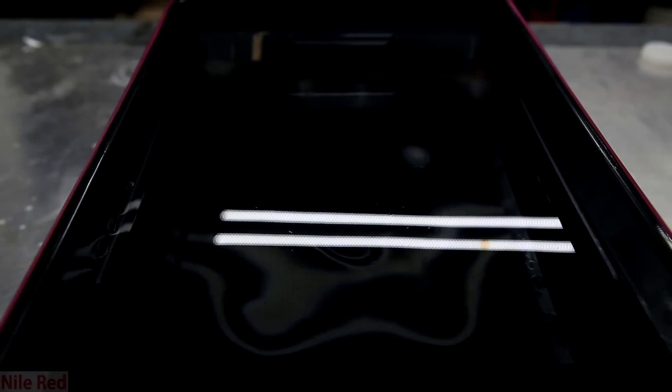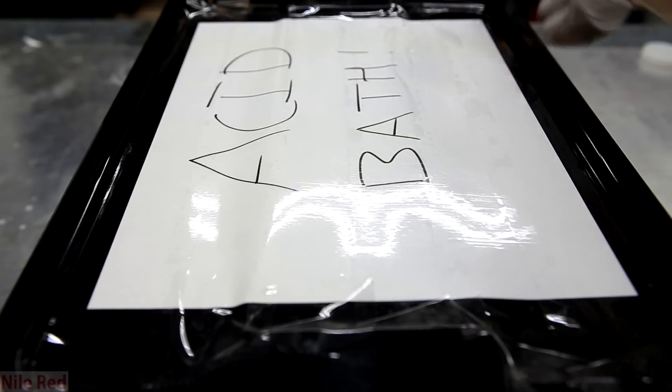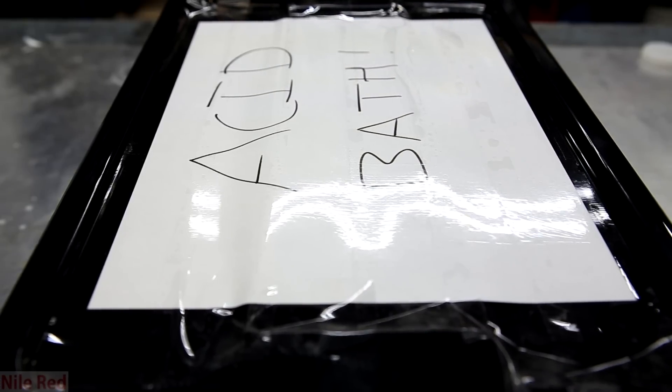Once it's all been added I place the lid on top which was labeled appropriately with acid bath and an exclamation mark to indicate that it's dangerous. Also you might notice that there's some purple electrical tape wrapped around the bin, and I use this to make the lid seal better.